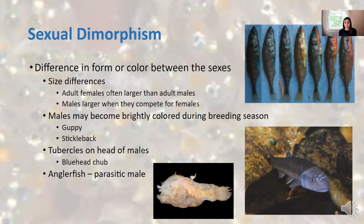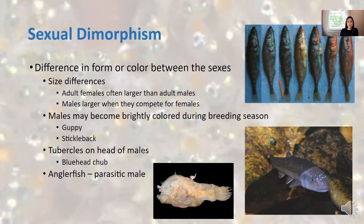In some species of fish, you see sexual dimorphism. Sometimes that difference is in size. More often, the size difference in fish is where adult females are larger than adult males. Sometimes males are larger, and that's when they're competing for females. With fish, there's often one female and multiple males that can mate with her, but if they're competing for a female, the males might be larger than the females.